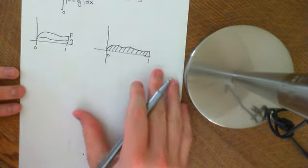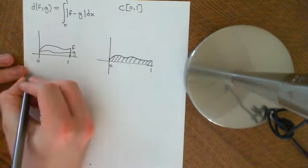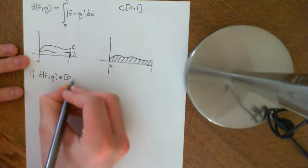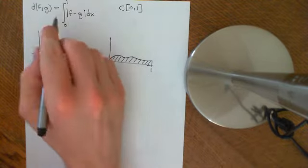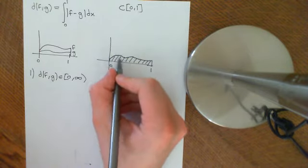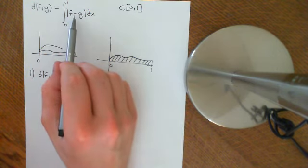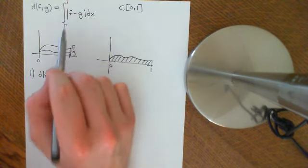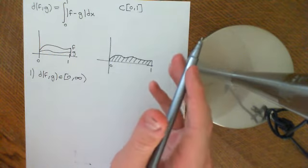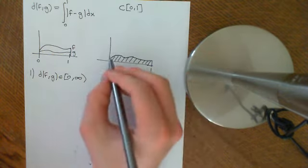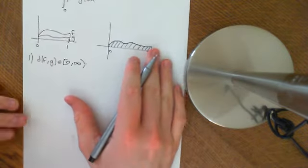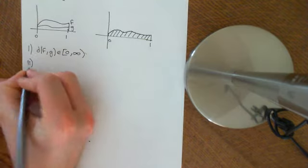Let's check that this satisfies the axioms of a pseudometric space. Axiom 1: the distance between F and G should be a non-negative real number. Since we're integrating the modulus of F minus G, this function is everywhere non-negative. Integrating a non-negative function gives a non-negative result — intuitively the area under a non-negative curve is non-negative — so we get a value between 0 and infinity.